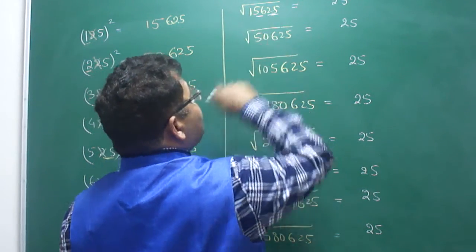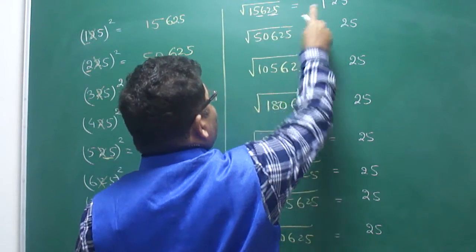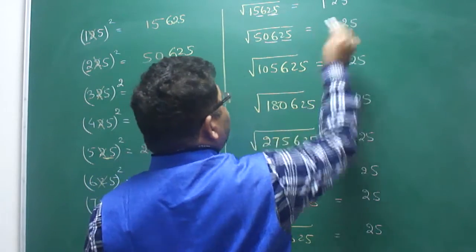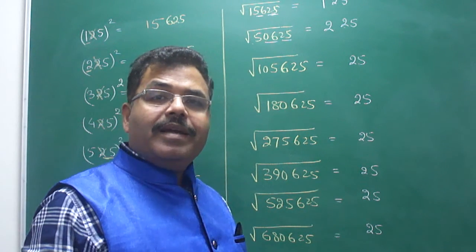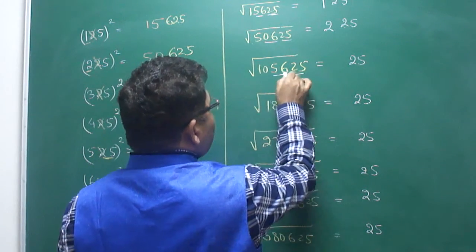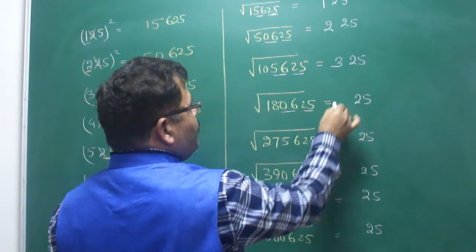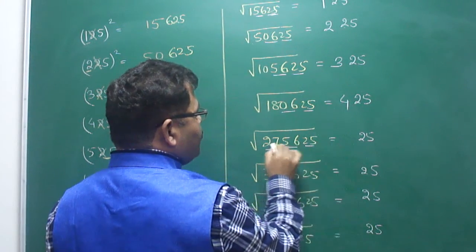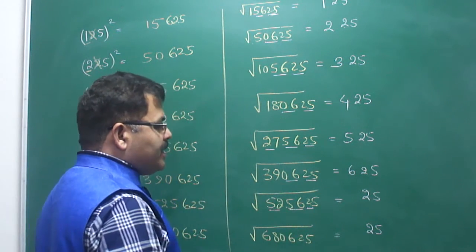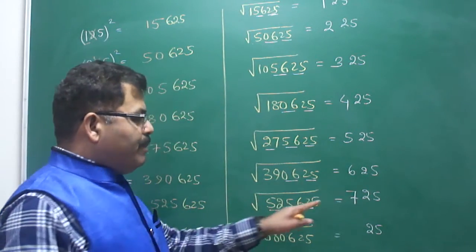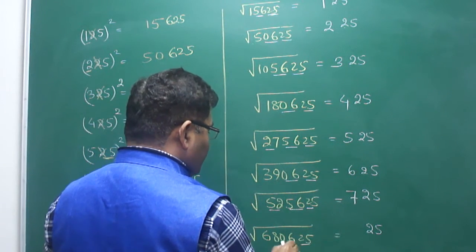In the long division method, two digits are removed at a time. After removing the last four digits (the 625 part), look at what remains. Find the maximum number whose square is less than or equal to the remaining digits. For example: remaining 1 → max is 1; remaining 5 → max is 2; remaining 10 → max is 3; remaining 18 → max is 4; remaining 25 → max is 5; remaining 39 → max is 6; remaining 52 → max is 7; remaining 68 → max is 8.